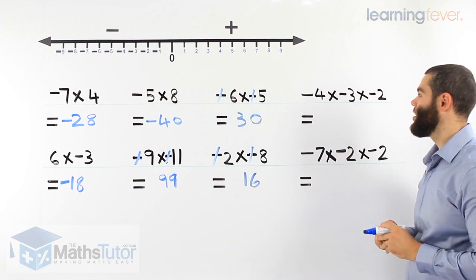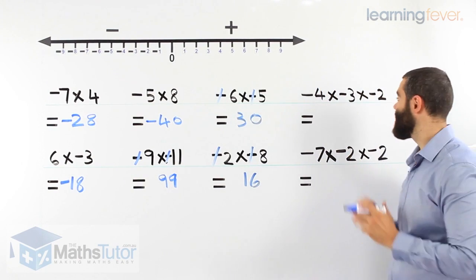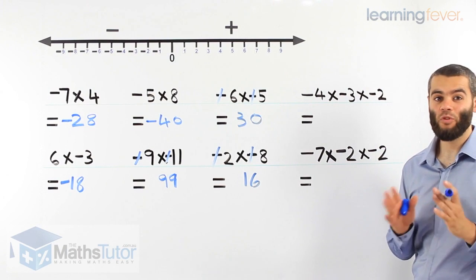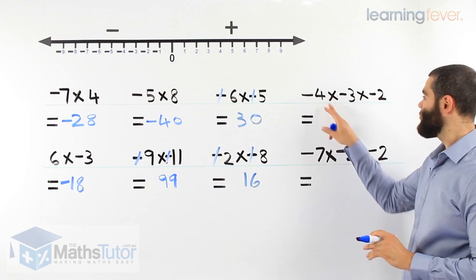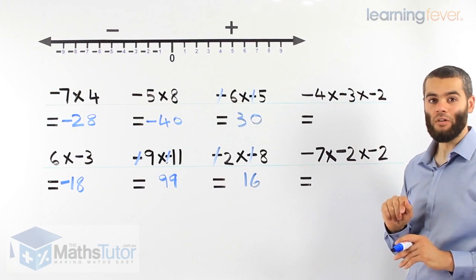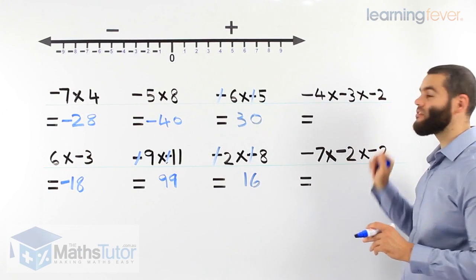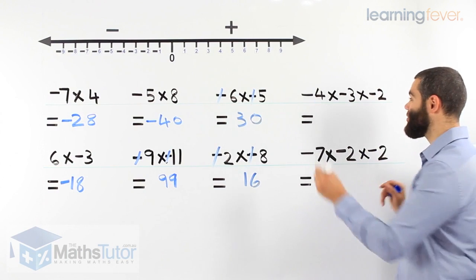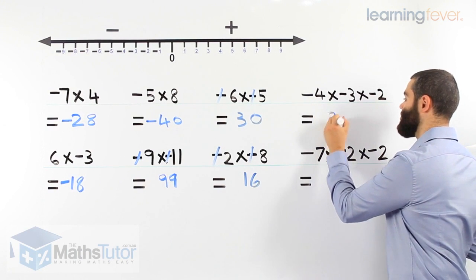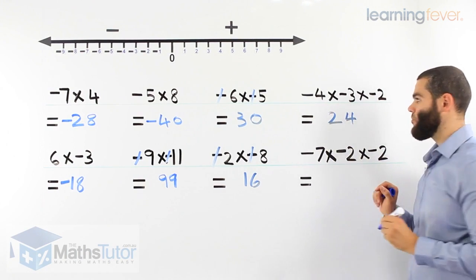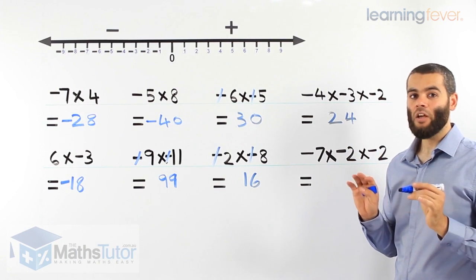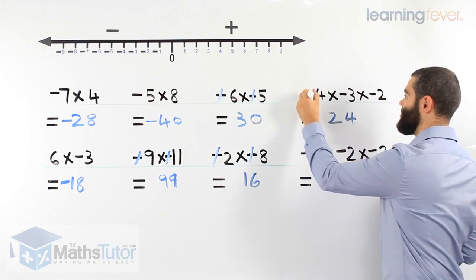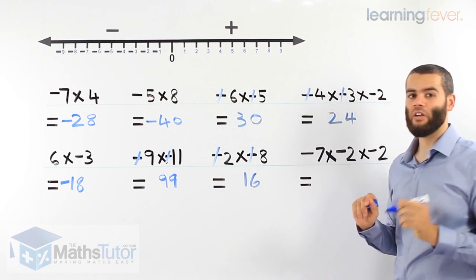Let's look at this one here. Negative 4 times negative 3 times negative 2. Let's do the multiplication. 4 times 3 is 12. 12 times 2 is 24. Now we know that when we have two negatives, they go, they partner up and they go. They go to the movies. So these two go to the movies, they're gone.